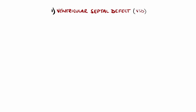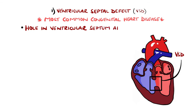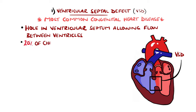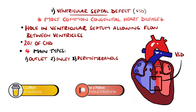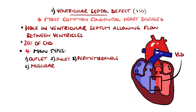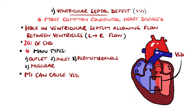The most common congenital heart disease is ventricular septal defect (VSD), where there is a hole in the ventricular septum allowing blood to flow between the left and right ventricles, representing around 20% of congenital heart disease. There are several positions: outlet (below the semilunar valves), inlet (below the atrioventricular valves), perimembranous (close to the membranous septum near the superior posterior right ventricle), and muscular (in the muscular portion of the septum). Note that VSDs are not always congenital — a complication of MI can also produce one.